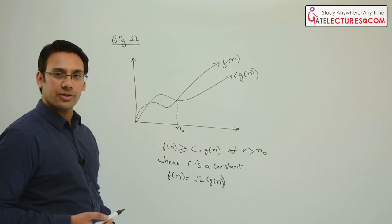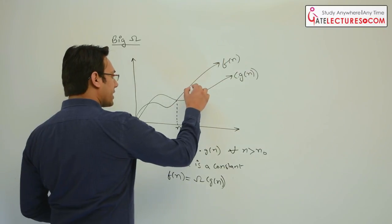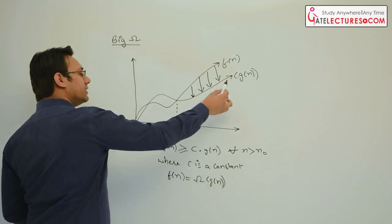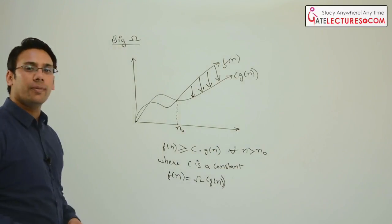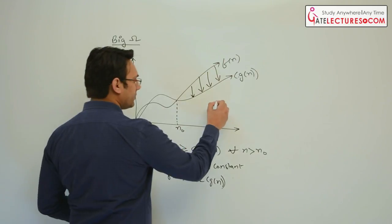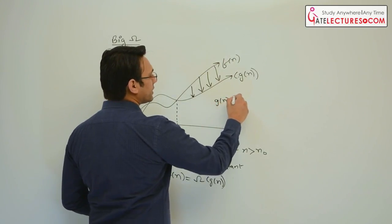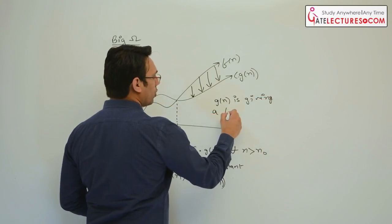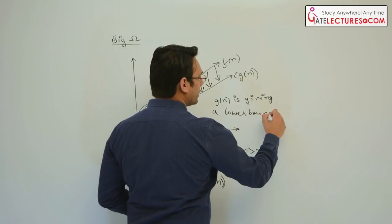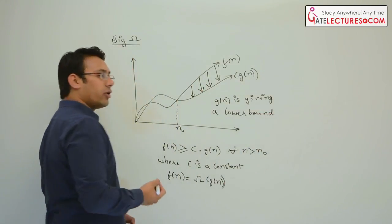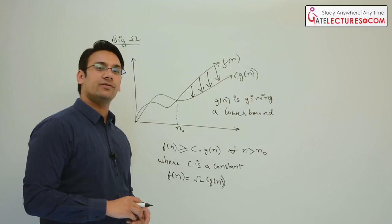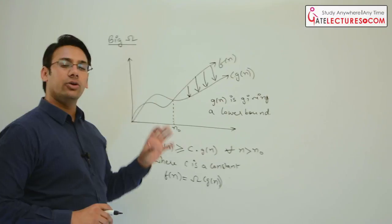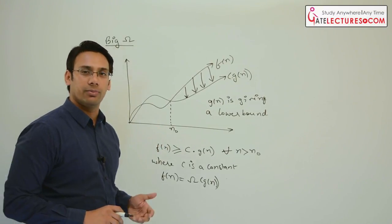This is the Big Omega notation. In this diagram, Gn is giving a lower bound to Fn. In the case of order notation, we have seen it gives the upper bound, whereas the Omega notation gives the lower bound. In algorithms, whenever we say order notation, that means what is the maximum amount of time a program is going to take to execute. When we give the Omega notation, that means what is the minimum amount of time that program is going to take.